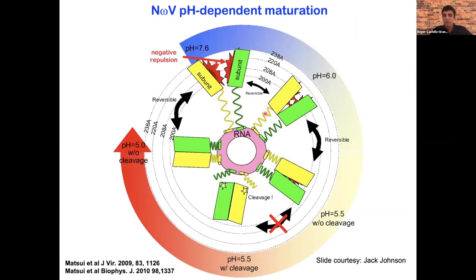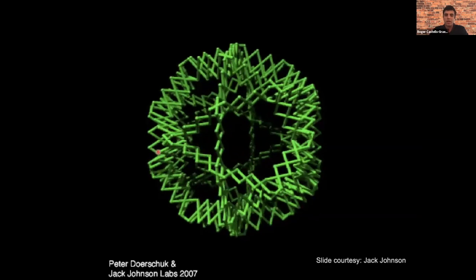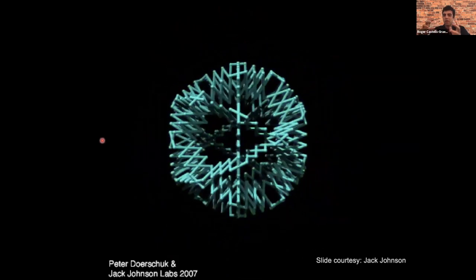This lytic peptide acts like a drilling machine that allows the virus to make holes in membranes. This virus is very useful because you can control its maturation with pH. Initially at neutral pH around 7.6, you can drop the pH and the virus will start compacting. At around 5.5, the cleavage process begins, and at pH 5 you get the final stage. It's like a sphere where you can control the size of the virus just by changing the pH.